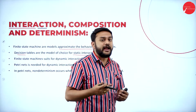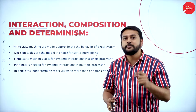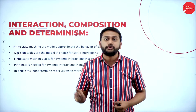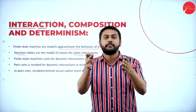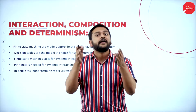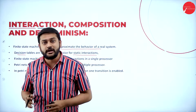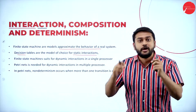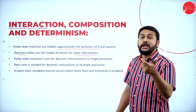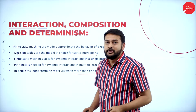When it comes to dynamic interaction with multiple processors, I will not use the finite state machine. Instead, I will use the Petri net — that is the best model to use for dynamic interaction with multiple processors. But even with the Petri net, I will still come across non-determinism.